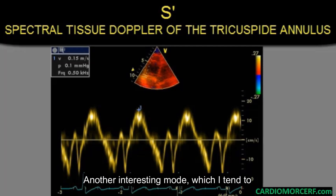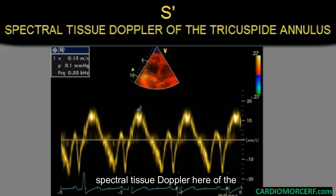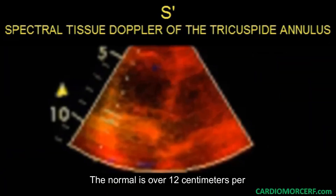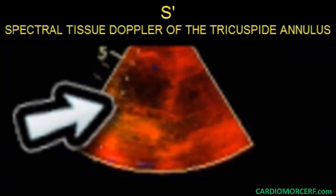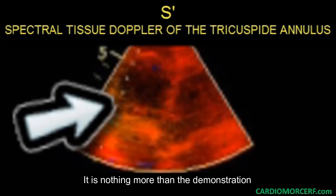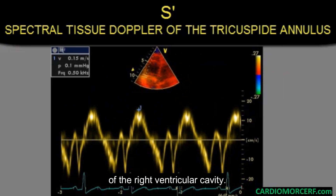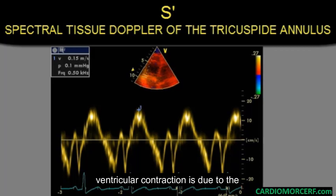Another interesting mode, which I tend to use under certain conditions, is the spectral tissue Doppler of the tricuspid annulus. The problem is that it is not very sensitive; the normal is over 12 centimeters per second. It is nothing more than the demonstration of the longitudinal velocity of the decrease of the right ventricular cavity. As we have seen, much of the right ventricular contraction is due to the cavitary reduction in this direction.